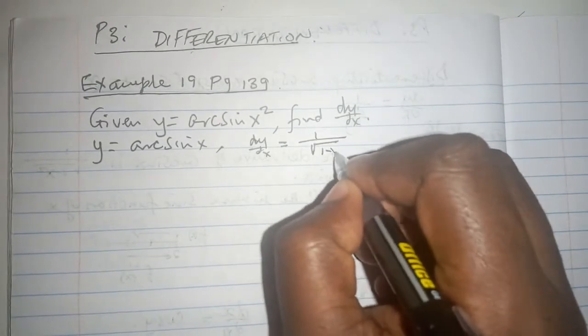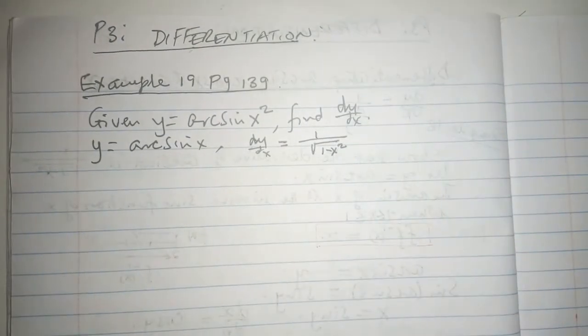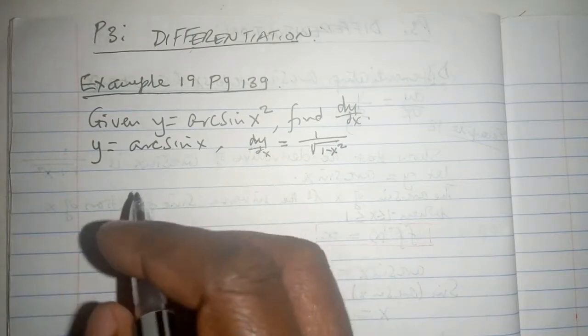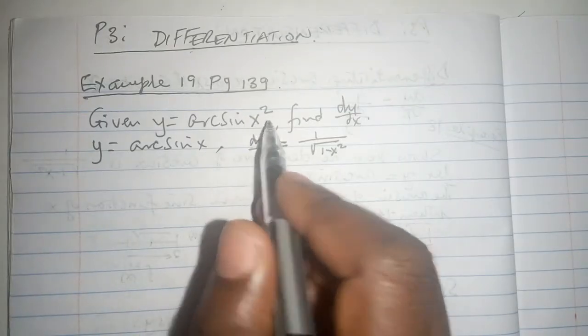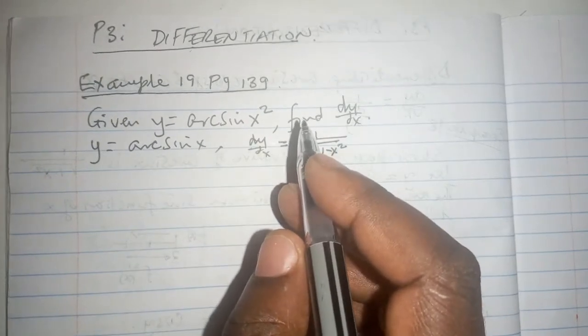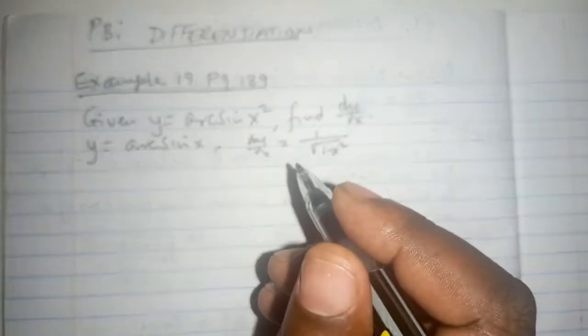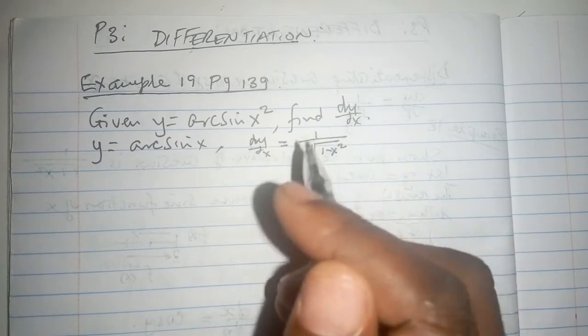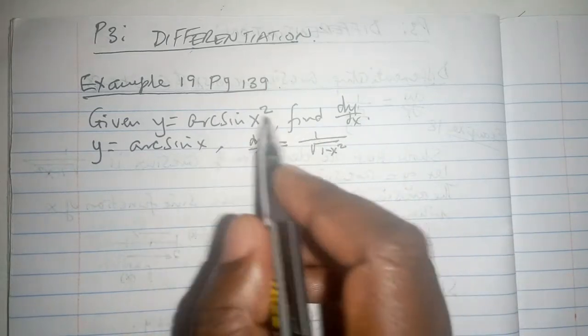And we are talking about y equals arc sine x squared. It's not just x but x squared, so the x itself is having an index.